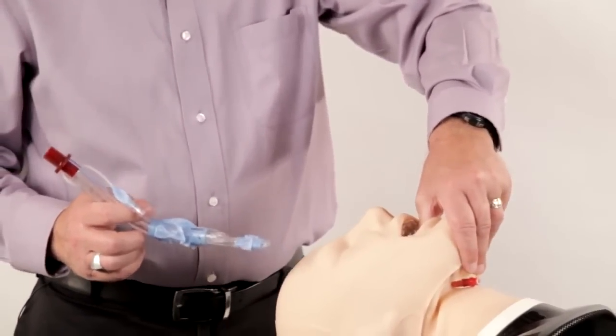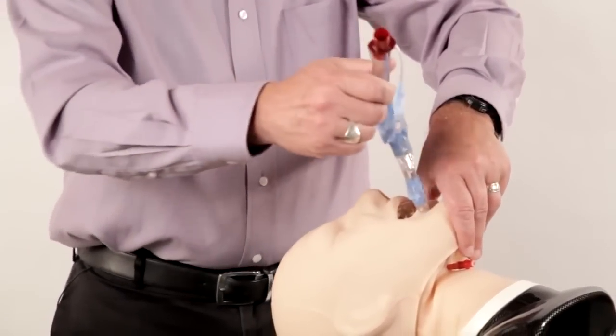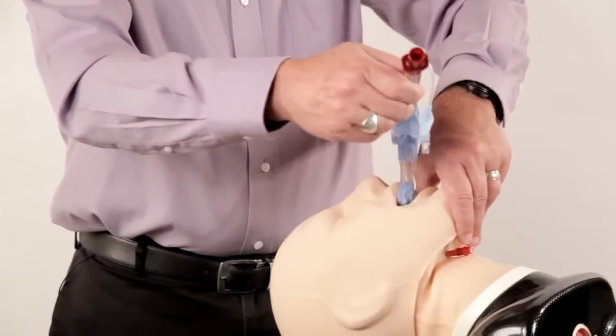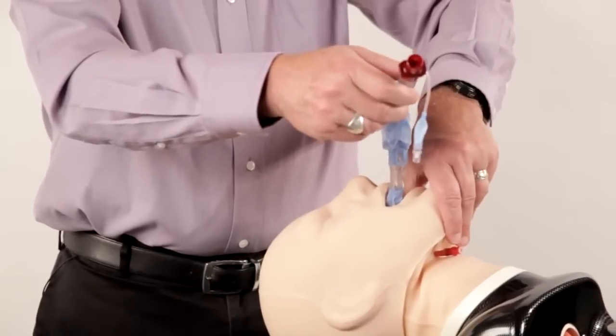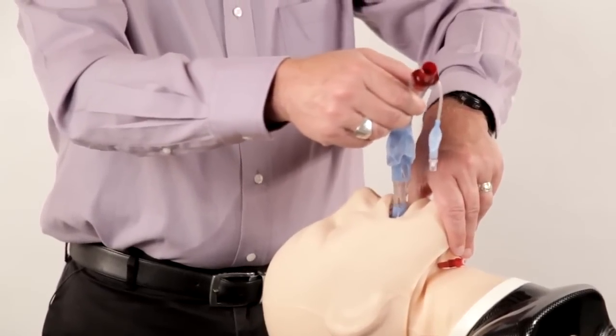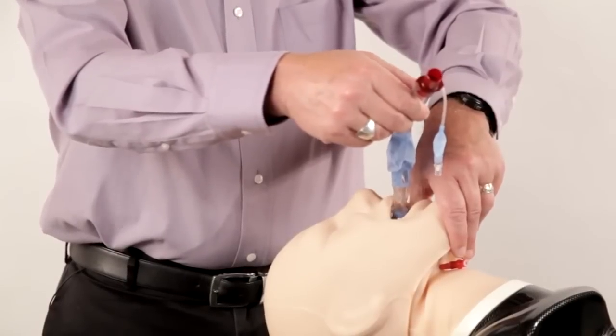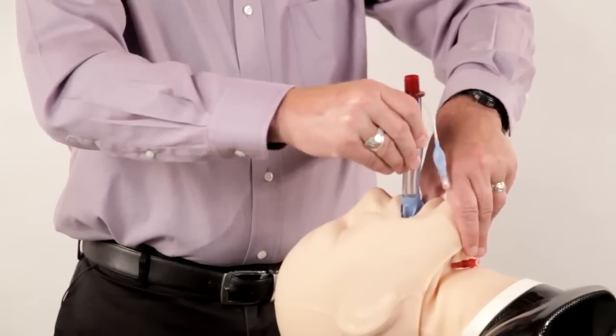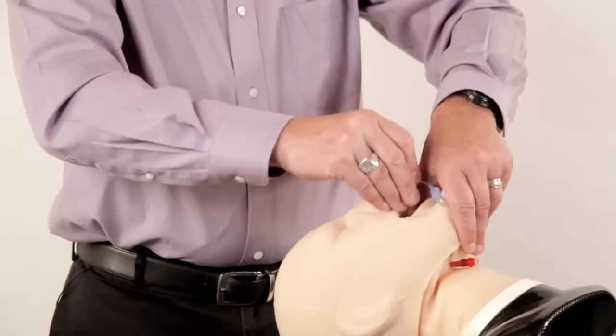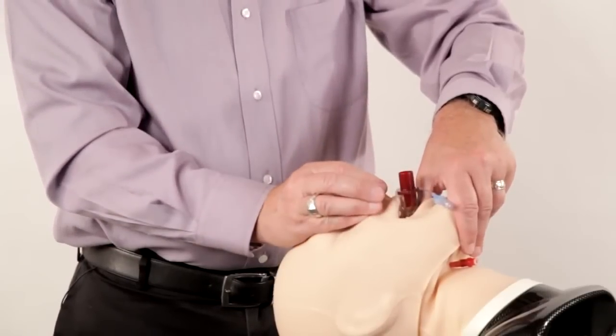Do a chin lift and control the tongue. Introduce the tip at roughly a 45 degree angle. And with one free and easy motion and without exerting undue pressure, advance the tip behind the base of the tongue, rotate it back to the midline, and advance the connector to the teeth.